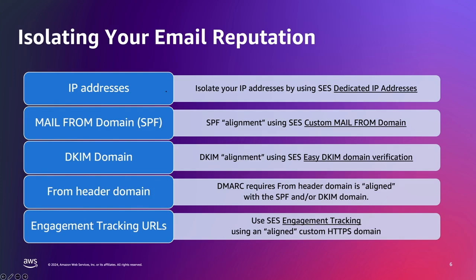To implement SPF for your mail from domain: when an email is sent, it has two email addresses that indicate its source — a from address that's displayed to the message recipient, and a mail from address that indicates where the message originated. The mail from address is sometimes called the envelope sender, bounce address, or return path address. Mail servers use the mail from address to return bounce messages and other notifications.